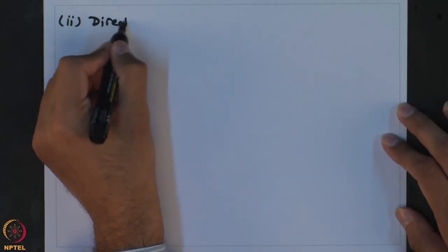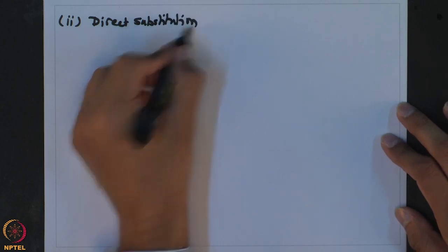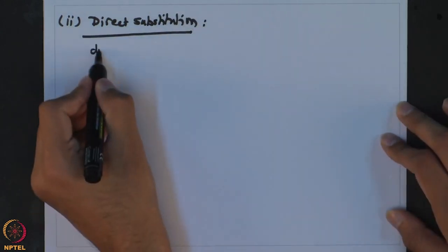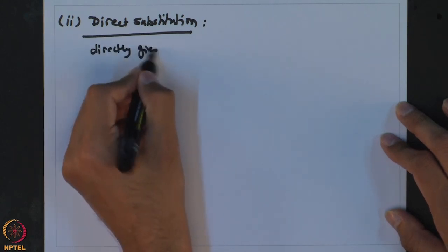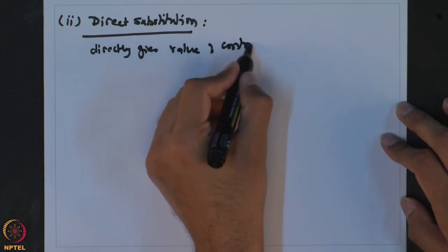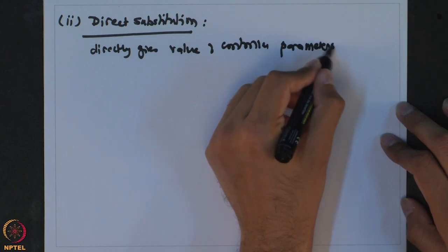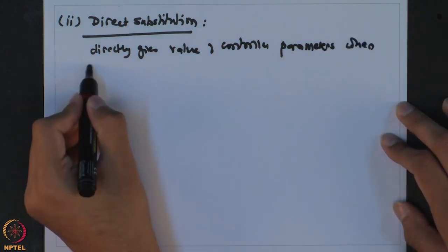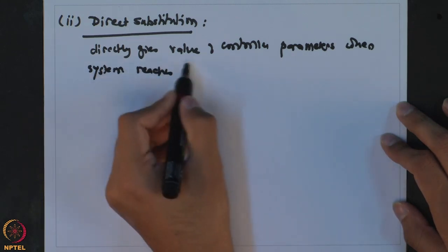Welcome back. Let us now consider another method of computing the maximum value of controller gain, which can be used for a particular example or in general, another way to assess the stability of a feedback system in the Laplace domain. That method is known as direct substitution. Direct substitution directly gives you the value of controller parameters when the system reaches the stability limit.